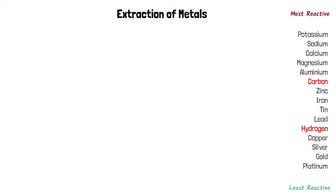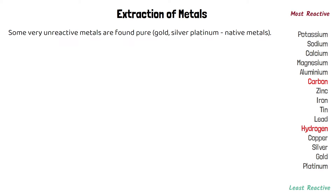Some of the most unreactive metals, for example gold, silver and platinum, are found in their pure form in the ground, so they're not found as compounds. We call these native metals and they don't need to be extracted.